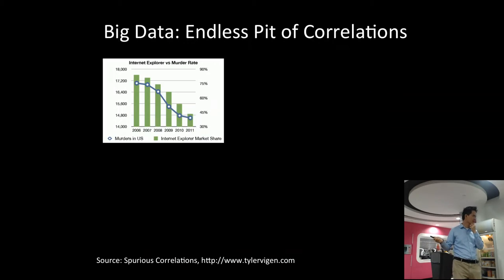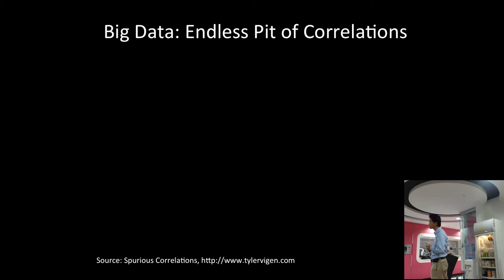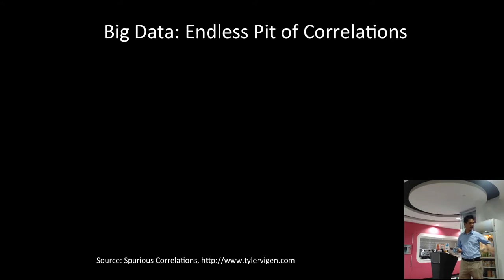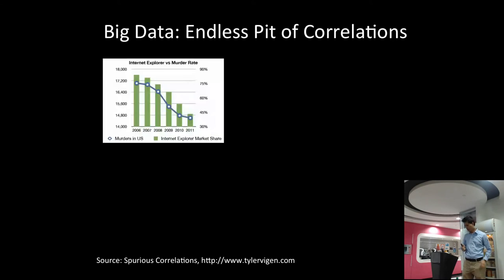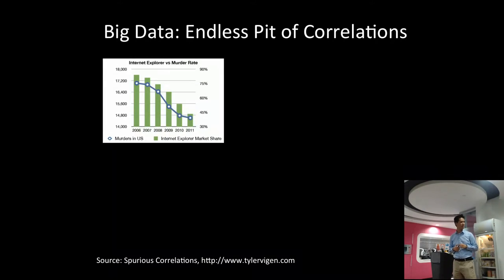One of the problems with big data is that it's really an endless pit of correlations. A lot of these methods are based on correlations. I like this site which talks about spurious correlations — what correlations can we find? Internet Explorer is highly correlated to murder rates in the United States at about 0.99.